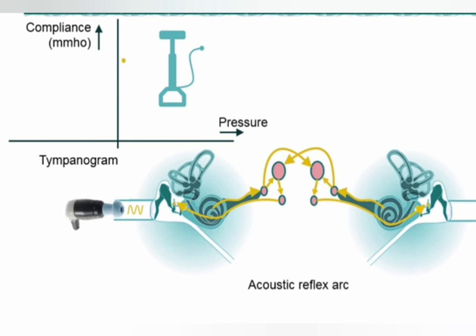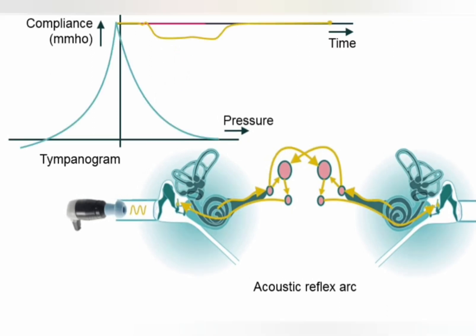In the stapedius reflex, the setting is the same as in tympanometry and an additional sound stimulus is given in one ear. Via the stapedius reflex arc, the impulse goes to the cochlea, to the cochlear nerve, then to the superior olivary complex, then from the superior olivary complex to the facial nerve, which contracts the stapedius muscle. This is recorded as a change in compliance — the tympanic membrane becomes stiff and less compliant, resulting in a negative deflection in the tympanogram.